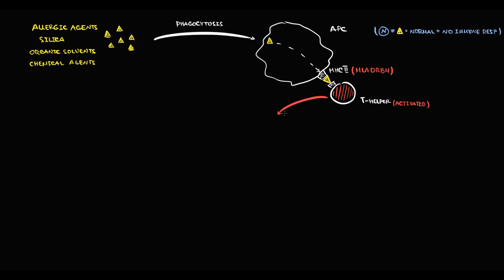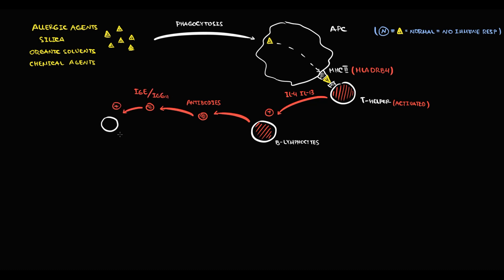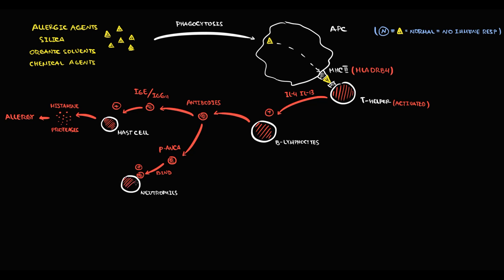Once T-helpers become activated, they produce interleukin-4 and interleukin-17, activating B-lymphocytes. B-lymphocytes then begin to produce antibodies — first immunoglobulin E and immunoglobulin G4, which provoke degranulation of mast cells, resulting in massive release of histamine and proteases that create the allergic state. B-lymphocytes also produce P-ANCA antibodies, which bind to and activate neutrophils; neutrophils then produce cytotoxic enzymes — elastase, proteinase, and myeloperoxidase — leading to severe tissue injury.